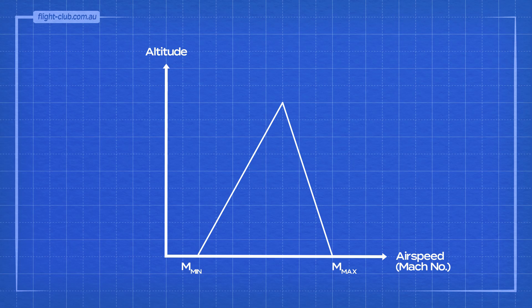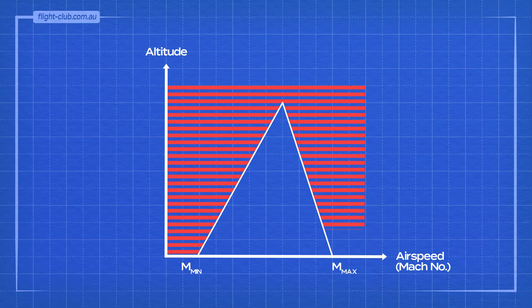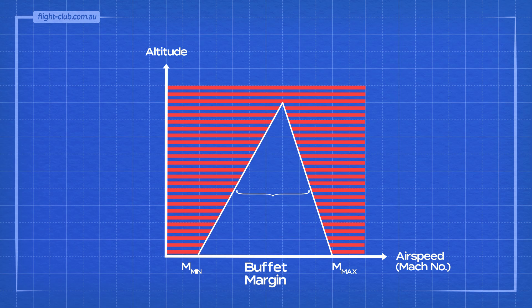The lines for Mach numbers of both low-speed and high-speed buffet represent two Mach number ranges below and above which the aeroplane is unable to fly. The speed range between the two Mach numbers is called the buffet margin. The margin between the low-speed and high-speed buffets decreases with increasing altitude.